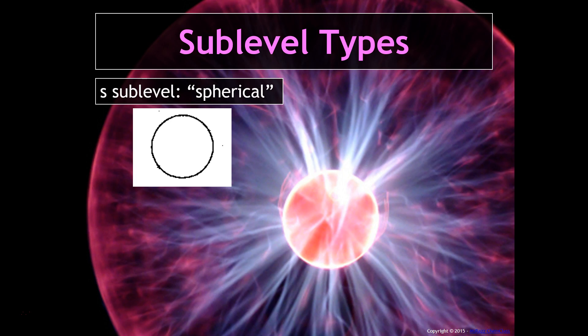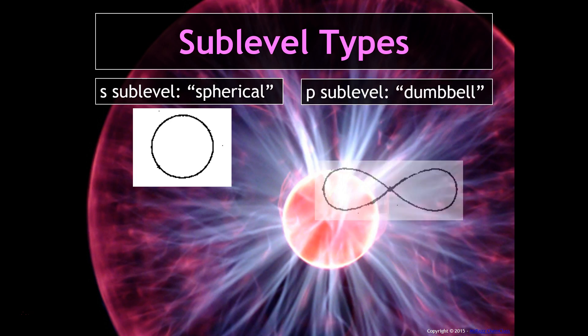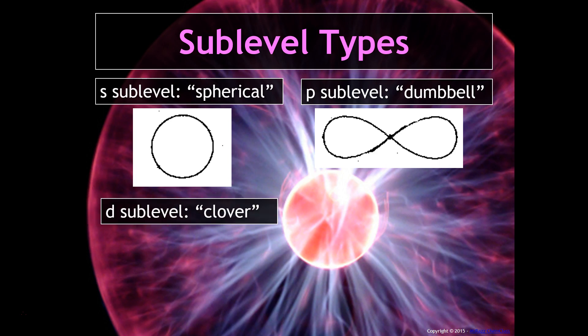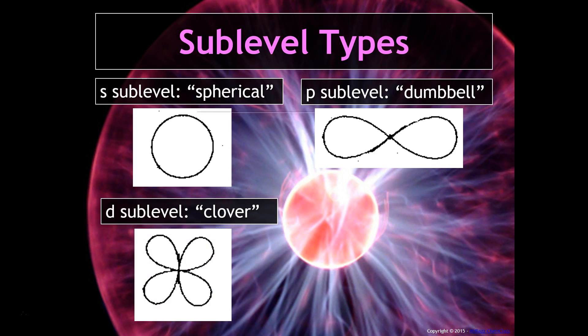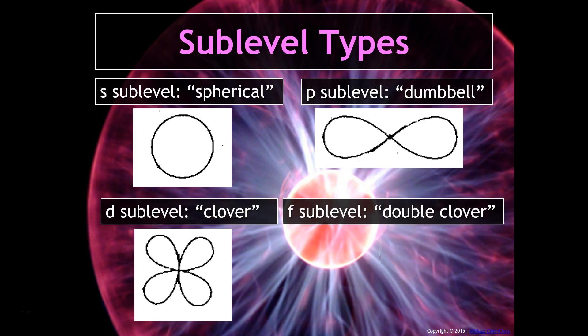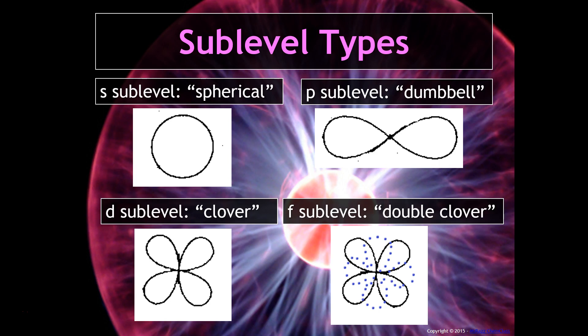These are shapes. The s sublevel is spherical. The p sublevel is dumbbell-shaped. The d sublevel is clover-shaped. And the f sublevel is a double clover. These are the shapes that are located within those principal energy levels.